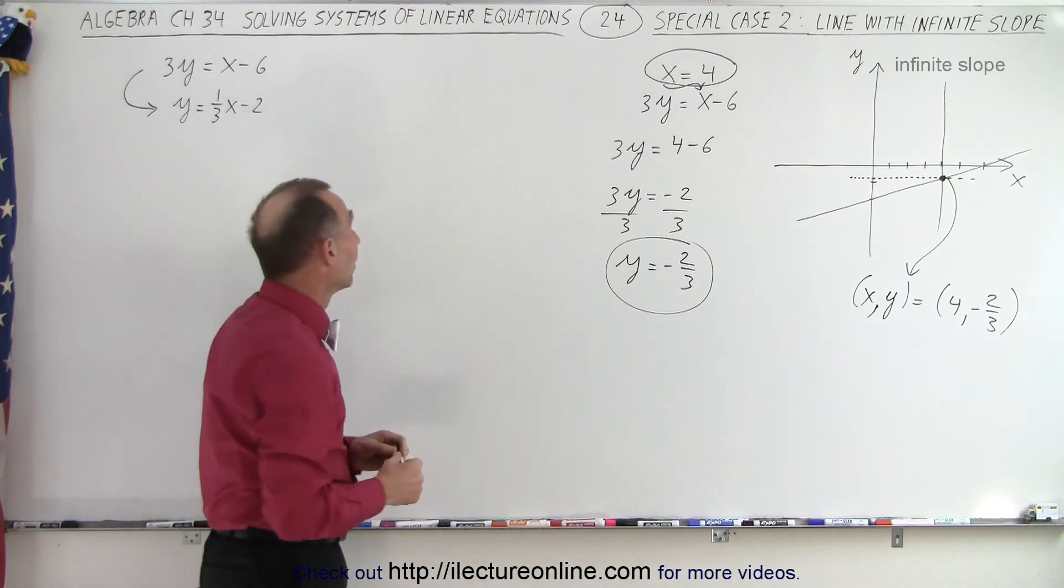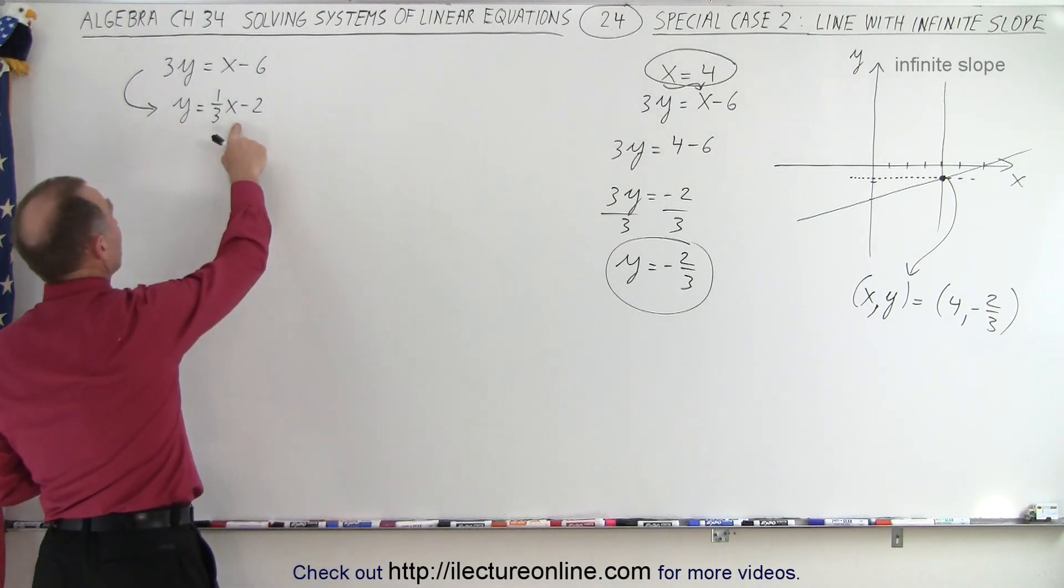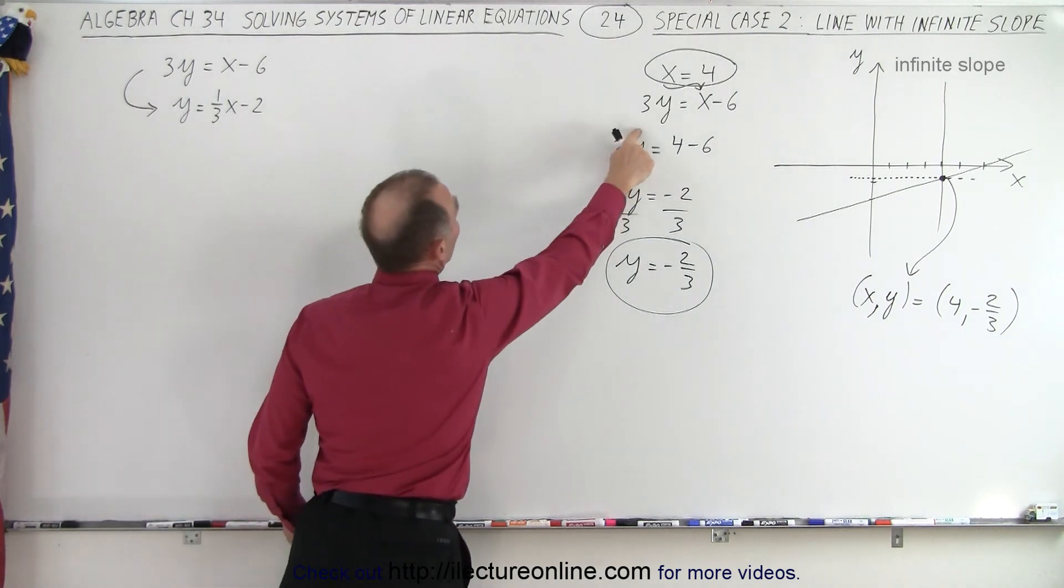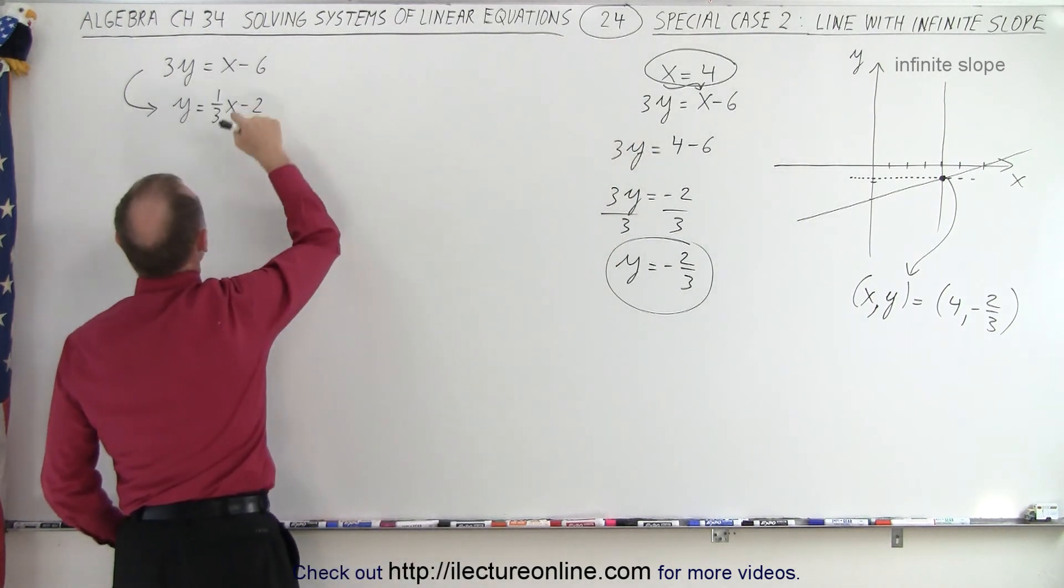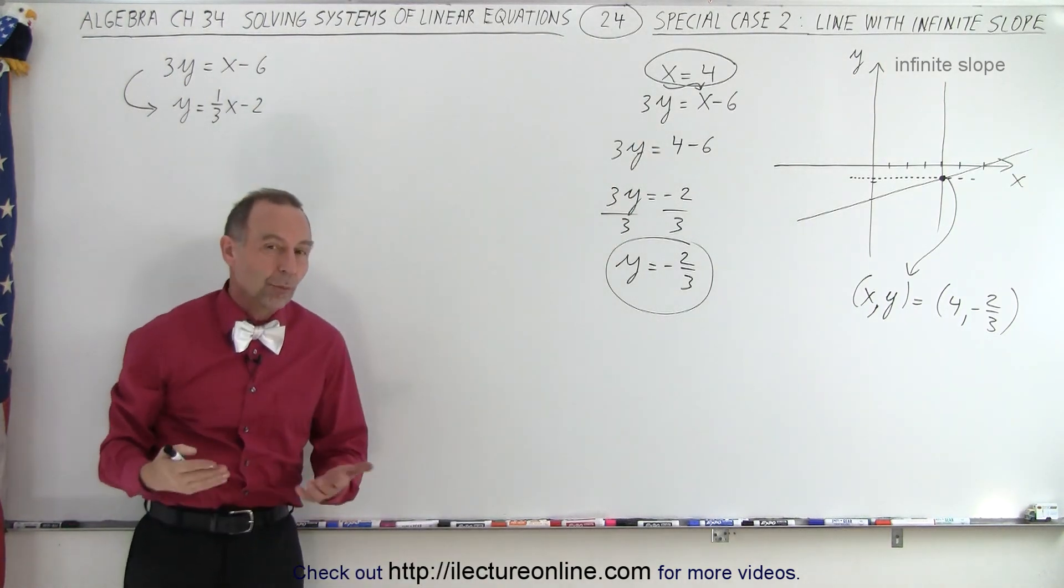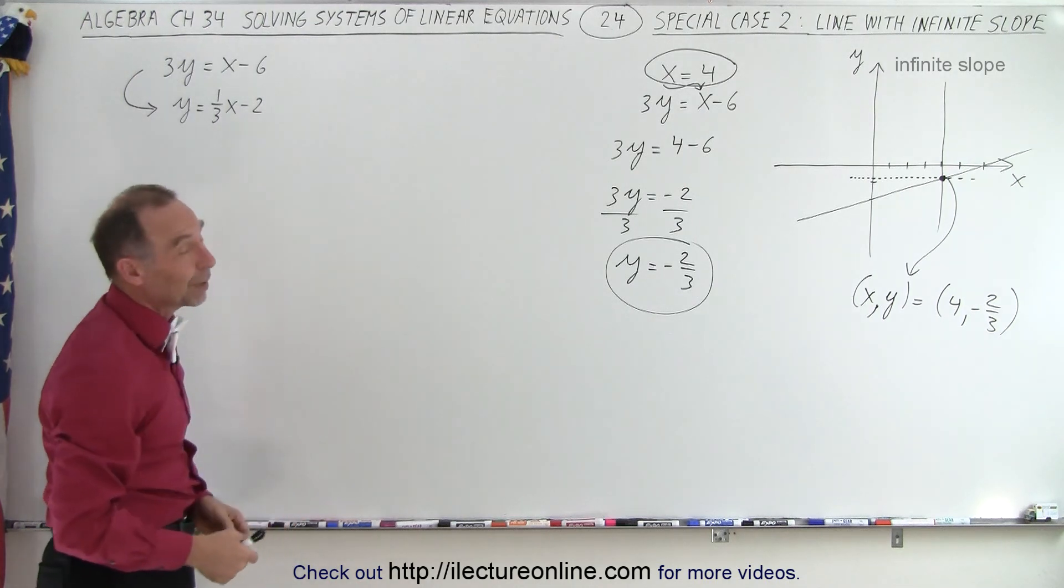What does that look there for? So the reason I put this up here is because I want to show you that the equation 3y equals x minus 6 can be converted into the regular slope intercept form, y equals mx plus b.